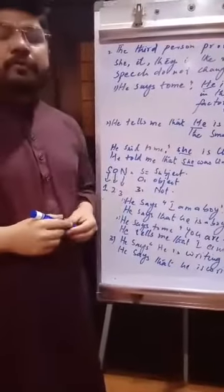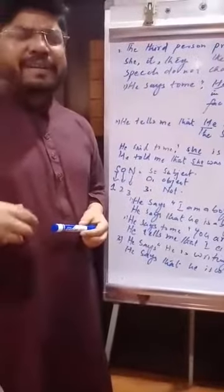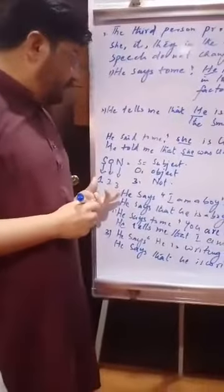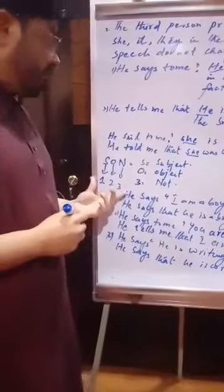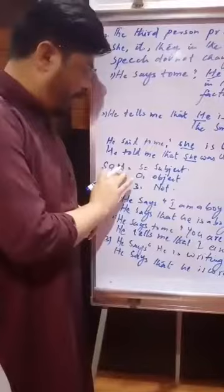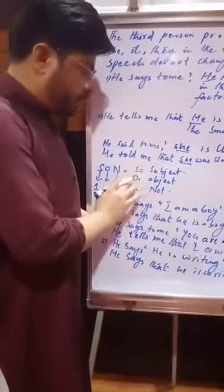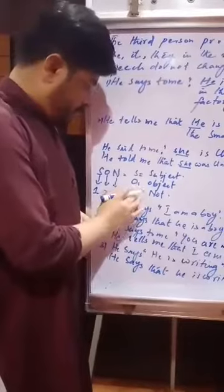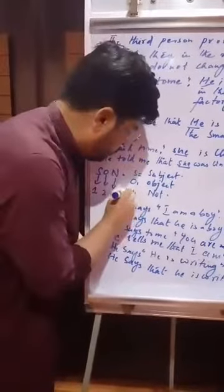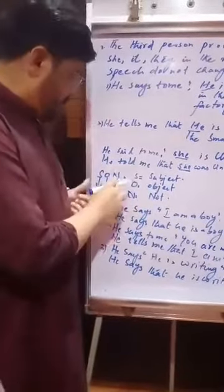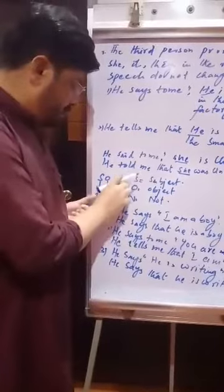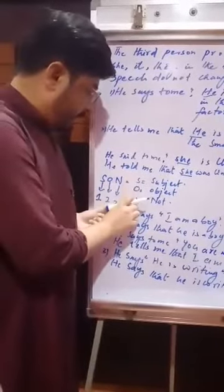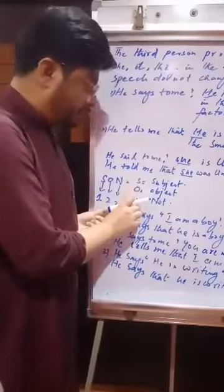Now, to remember this easily, we will apply the SON formula — S, O, N. S is for subject, O is for object, and N is for 'not.' Here, subject means first person pronoun, O means second person pronoun, and N means third person pronoun.